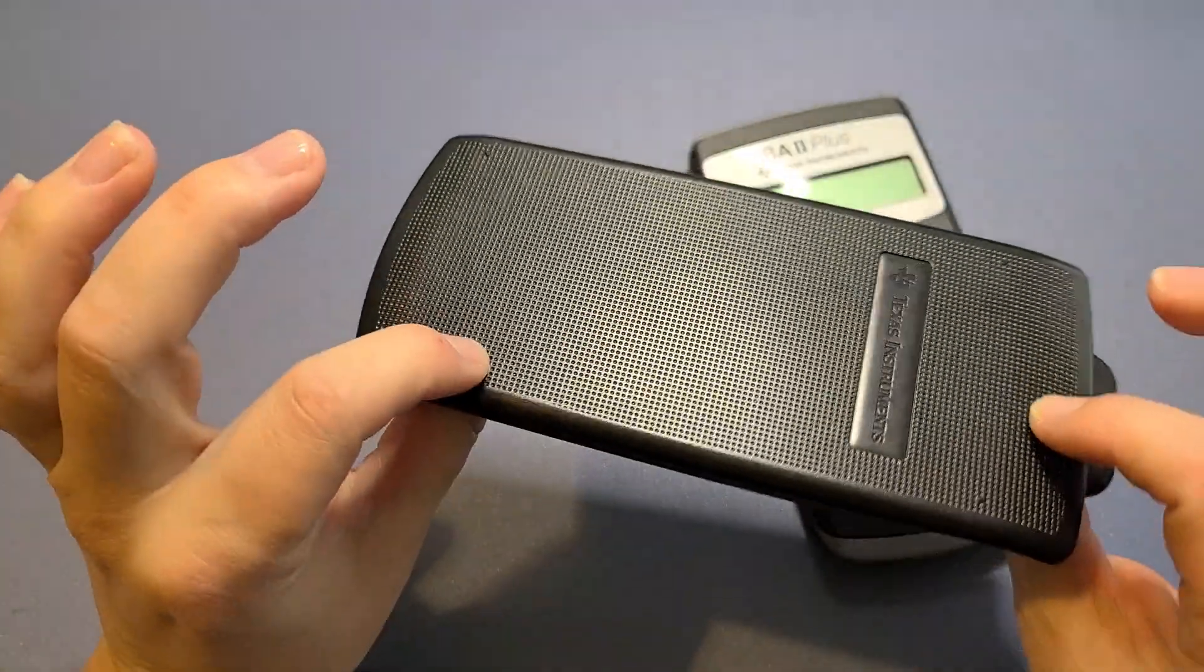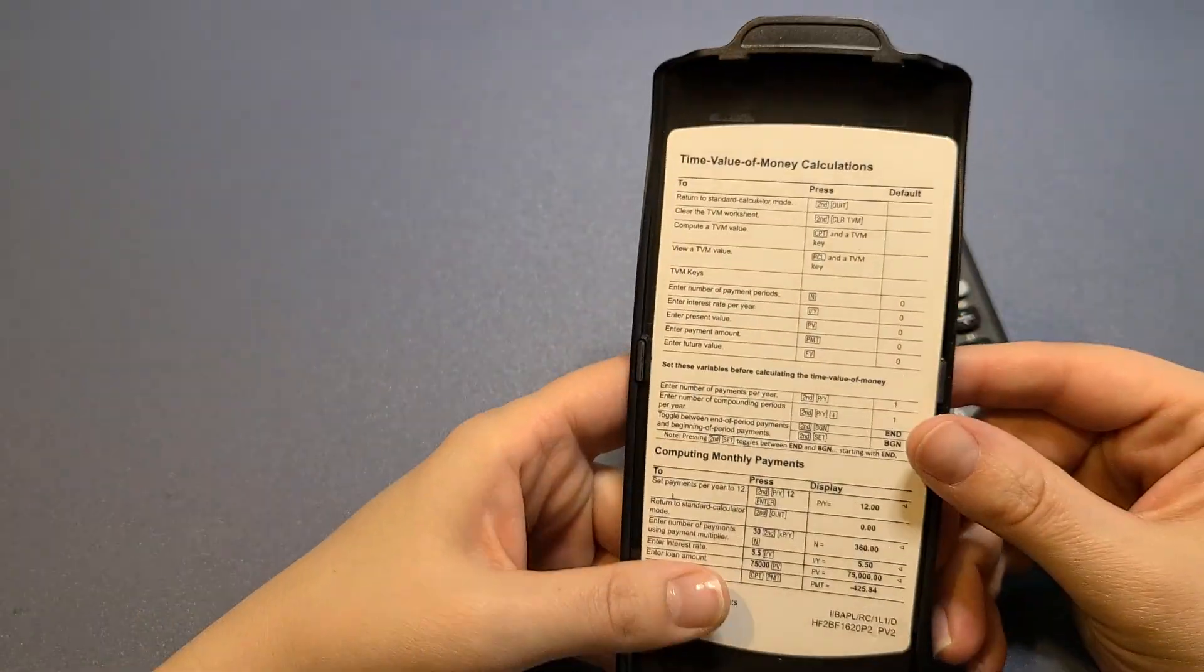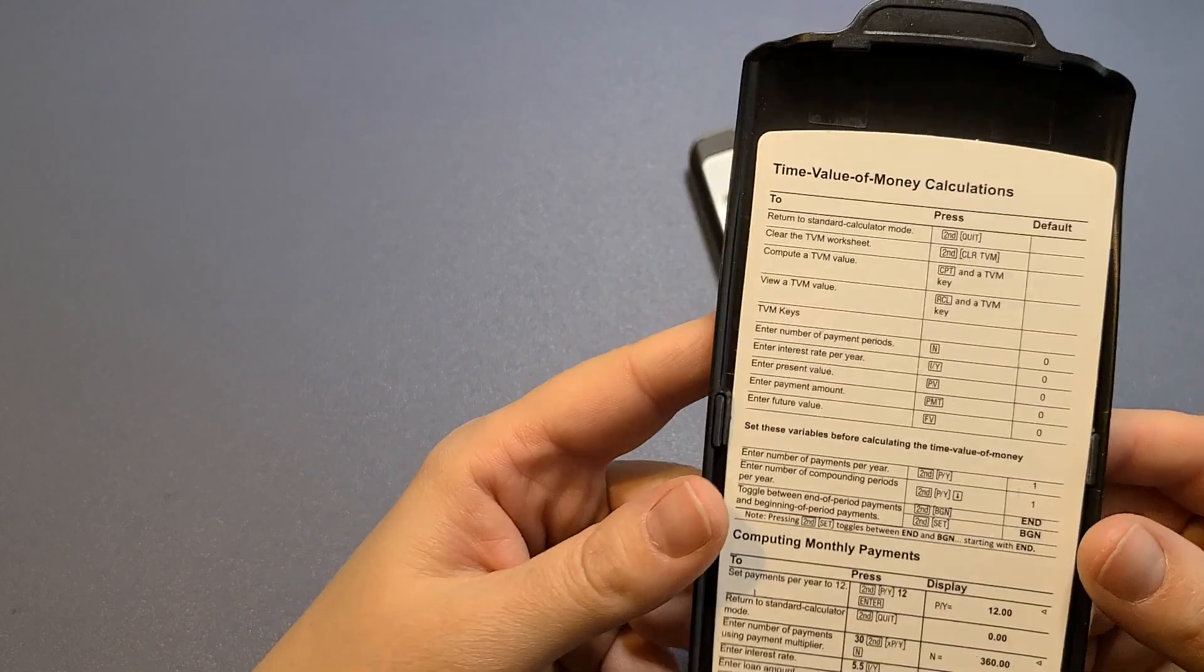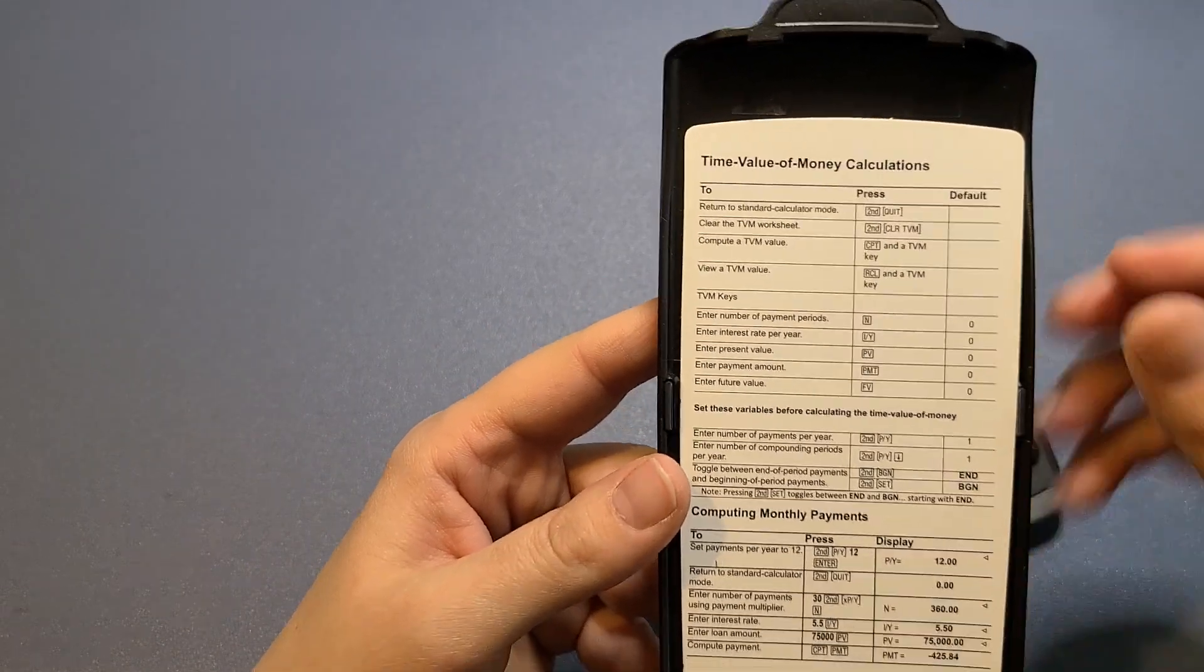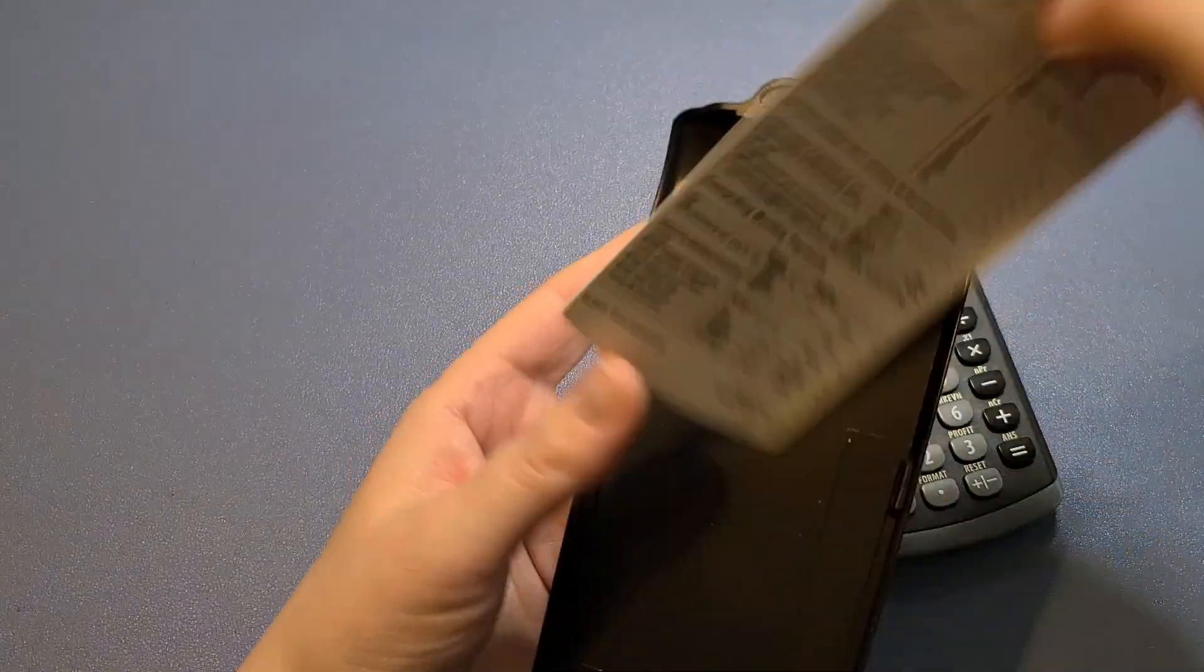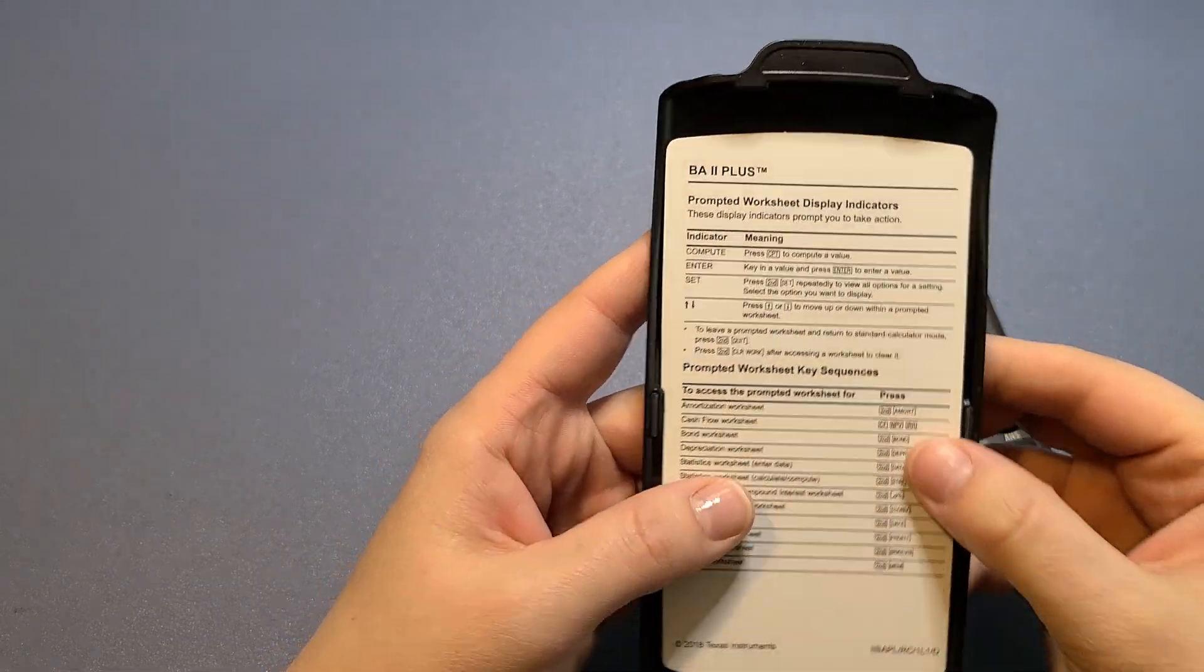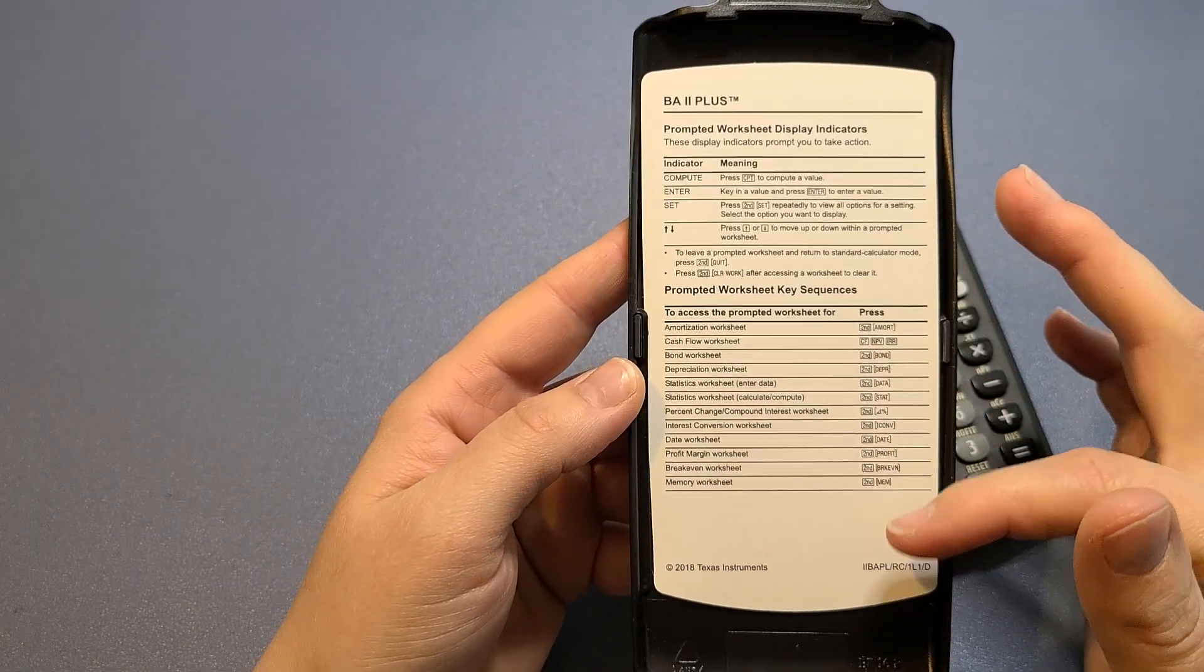It comes with the top so you can just put that on there and throw it back into your bag or purse. On this side it has the time value of money calculations, and on the other side it has what the different displays mean.